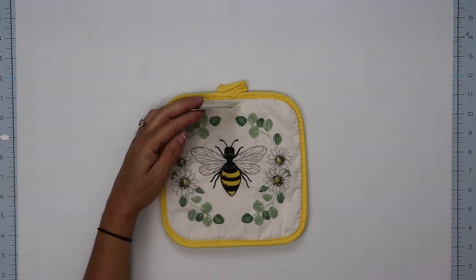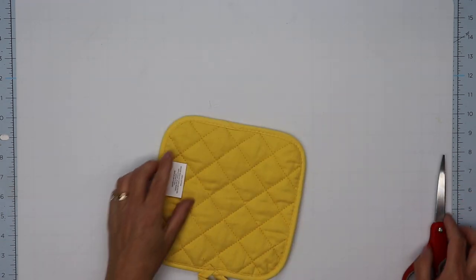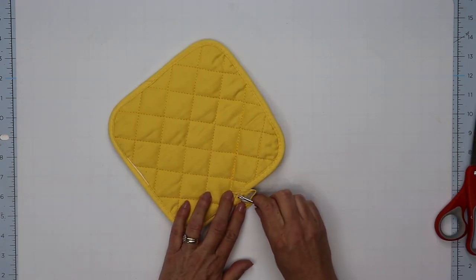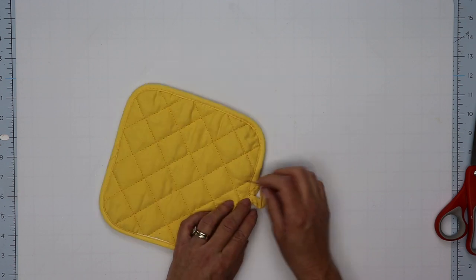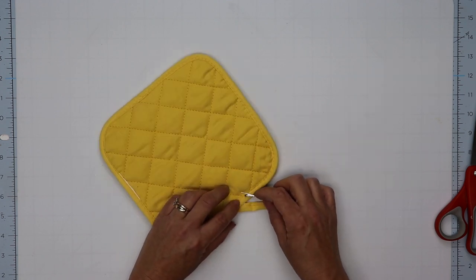For project number three, now this did not come from Dollar Tree because I could not find a potholder with a bee theme on it, but I did find this at Dollar General for one dollar. I removed the tags and then carefully removed the thread holding the loop together.